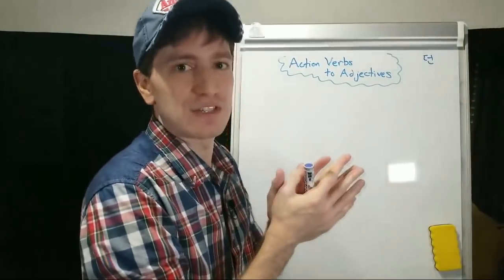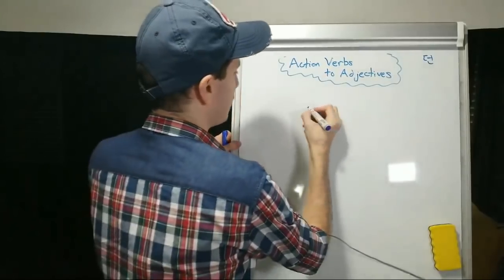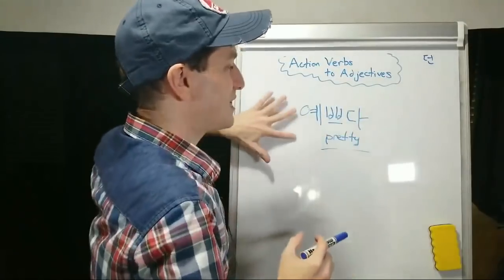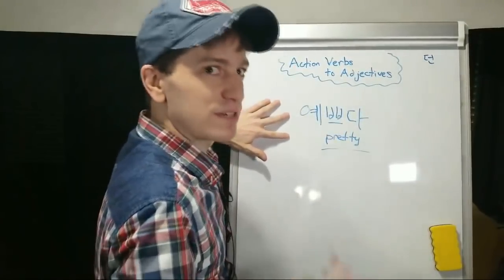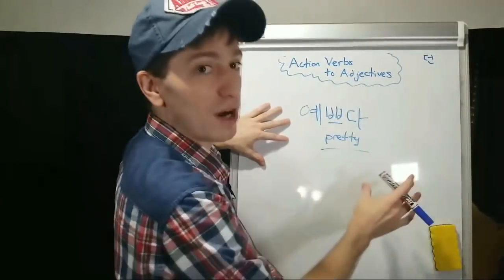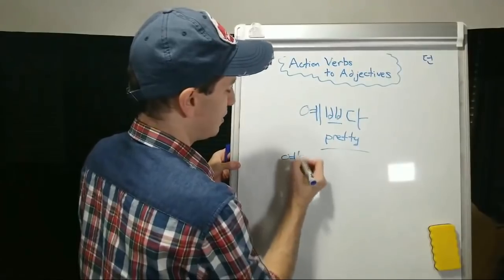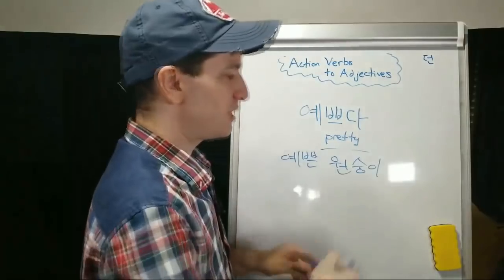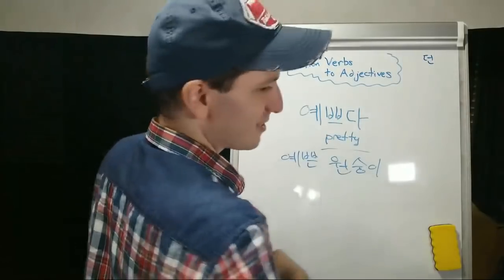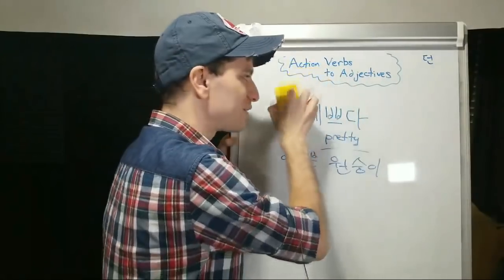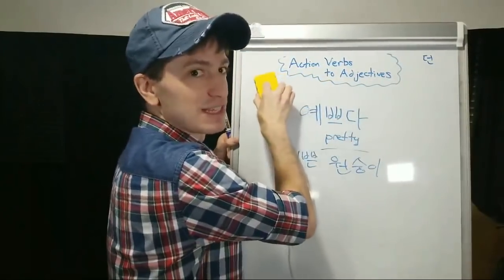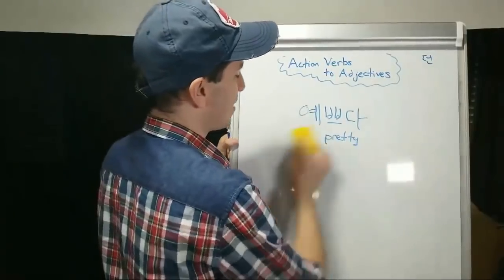If you know how to conjugate adjectives in Korean — to take the verb 예쁘다, to be pretty, and change it into a descriptive adjective to describe something, if you can make this say a pretty monkey, 예쁜 원숭이 — then you can already do this. You just have to learn a new set of rules. This literally translates the exact same as what the other form literally translates as.